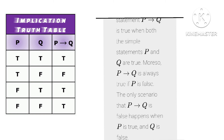For implication (p → q): the key condition to remember is that true-false gives false. That is the only combination that gives false. All remaining combinations give true: true-true gives true, false-true gives true, and false-false gives true. So just remember that when p is true and q is false, the implication is false; all other cases are true.